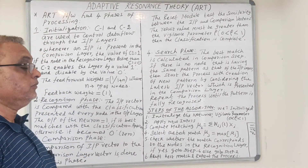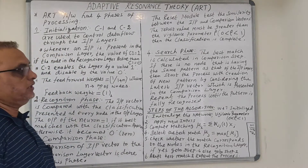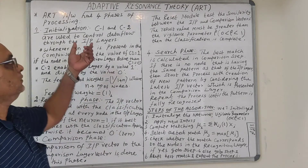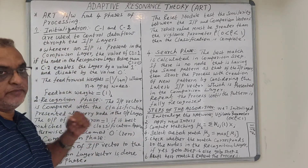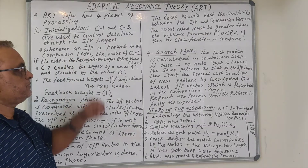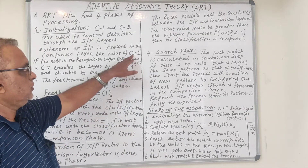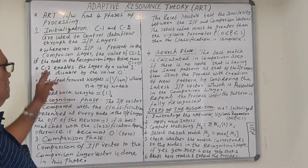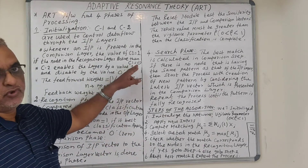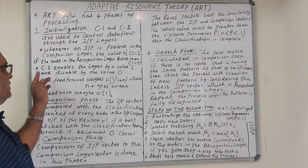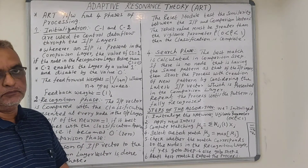There are four phases of processing in ART. The first phase is initialization, in which two control parameters c1 and c2 are used to control data flow through the input layers. When an input is present in the comparison layer, c1 equals 1; if the node in the recognition layer is active, c1 equals 0. Similarly, c2 enables the layer with value 1 and disables it with value 0.